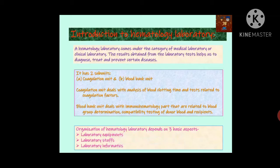The organization of the hematology laboratory depends on three basic aspects: number one is laboratory equipments, number two is laboratory staffs, and number three is laboratory informatics. Laboratory equipments are those essential accessories without which we cannot think of any laboratory, whether hematological, biological, or biochemistry. Laboratory staffs are those learned people who actually run the hematology laboratory, like a lab technician and a lab in-charge.